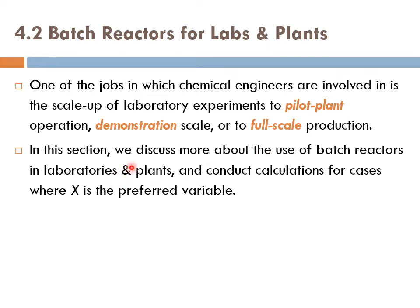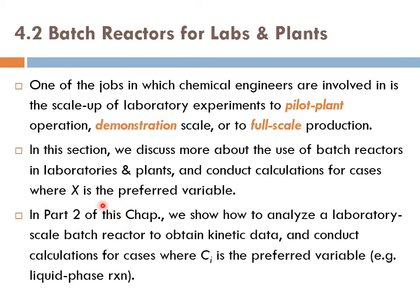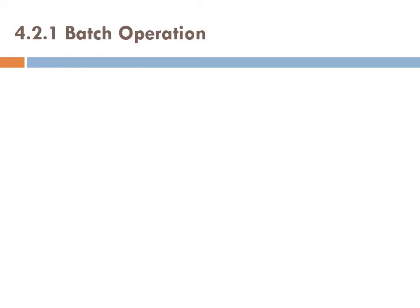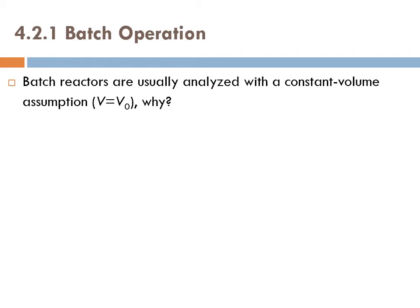In this section, we discuss more about the use of batch reactors in laboratories and plants, and conduct calculations for cases where X is the preferred variable. Remember, we are in part 1 of chapter 4, and in part 1 of chapter 4, we are interested in utilizing design equations written in terms of conversion. In part 2 of this chapter, we show how to analyze a laboratory-scale batch reactor to obtain kinetic data and conduct calculations for cases where concentration is the preferred variable.